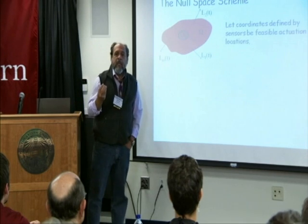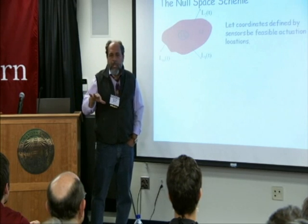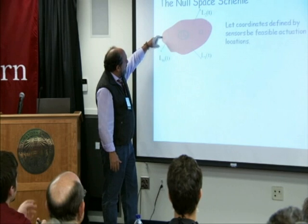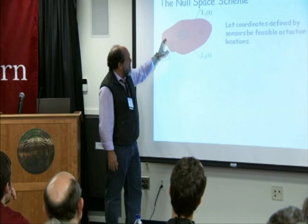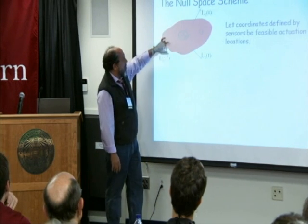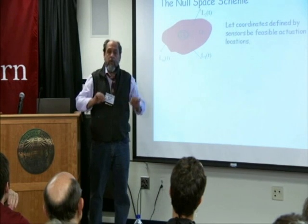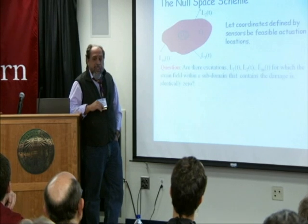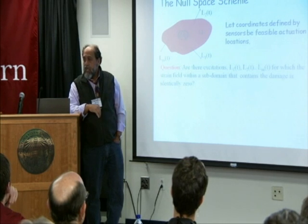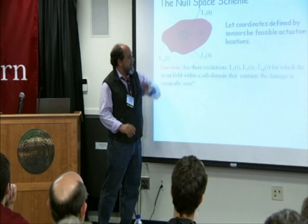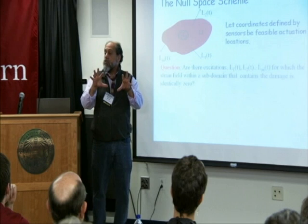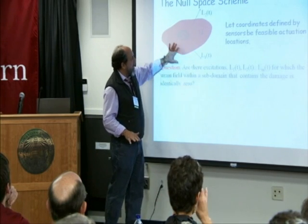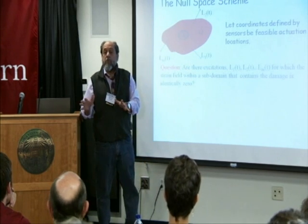What we are trying to do is look at the reverse side of the coin. Instead of looking at what has changed, we are looking at what has not changed — that's the idea behind 'null.' This is the body, in this case the part. Let the coordinates defined by the sensors be feasible positions for actuation — assume you have a sensor here, a sensor here, and a sensor there, and let those positions be places where you could have loadings. The question we ask is: is there a set of excitations L1, L2, ..., Lm — m being the number of sensors — for which the strain field in the subdomain that contains the damage is zero? In other words, is there a way to excite this structure such that the damage is entirely unobservable — you cannot see it because the stress field generated by these loads is identically zero within the patch where there's been a change.